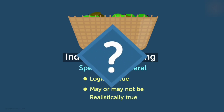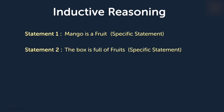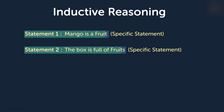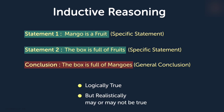What does that mean? Let's consider an example. Statement 1 says that the mango is a fruit, and statement 2 says the box is full of fruits. We try to draw a conclusion from these two statements. We draw the conclusion that the box is full of mangoes. Here statements 1 and 2 are true, but the conclusion drawn, although logically true, can be false if the basket contains any other fruit apart from mangoes. It's logically true but not definitely true. So that was inductive reasoning.